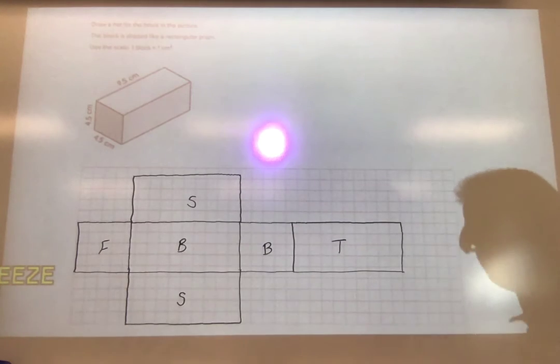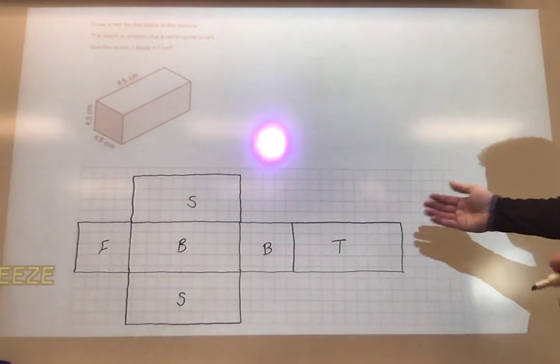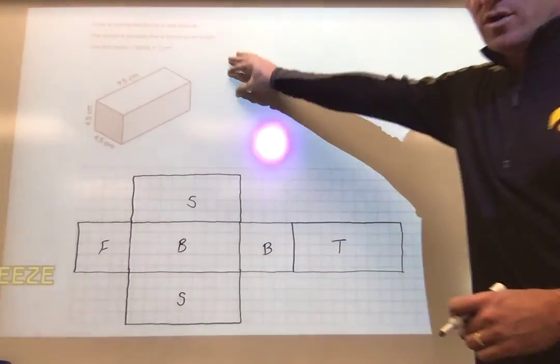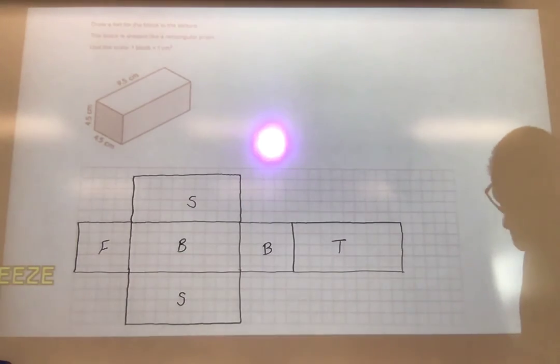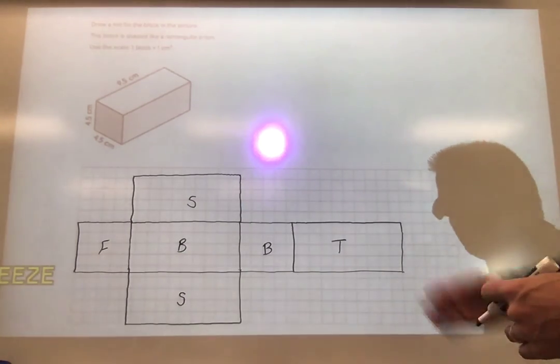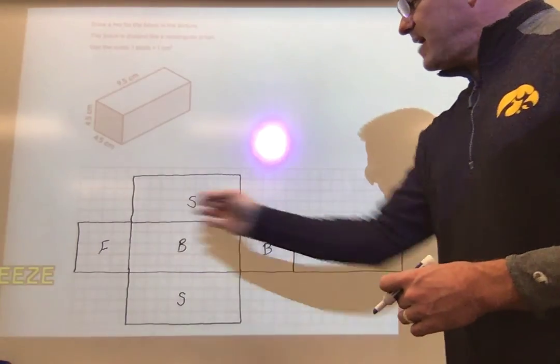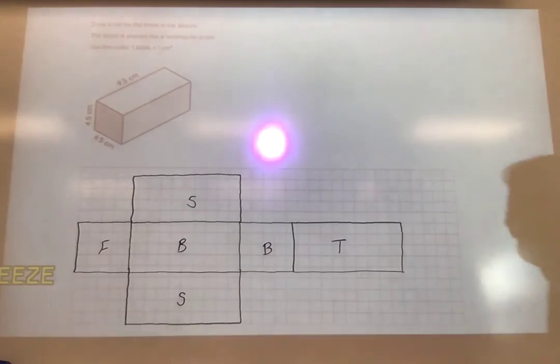You should be able to identify that this is the rectangular prism here, whether it's in this form or whether it's in its net form, because we know it has six faces and all those faces are opposite should be the same to make them that rectangular shape. Make sure you get this drawn in please.